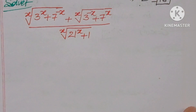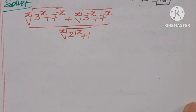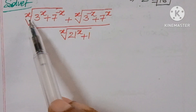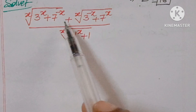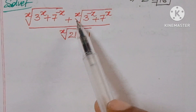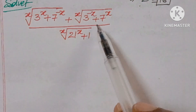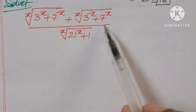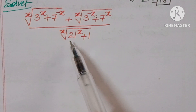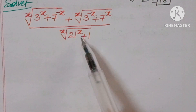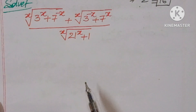Hello, welcome back to Ion CG Max. Today we are going to solve one logical problem. The question is: given x root of 3 power x plus 7 power minus x, plus x root of 3 power minus x plus 7 power x, over x root of 21 power x plus 1.